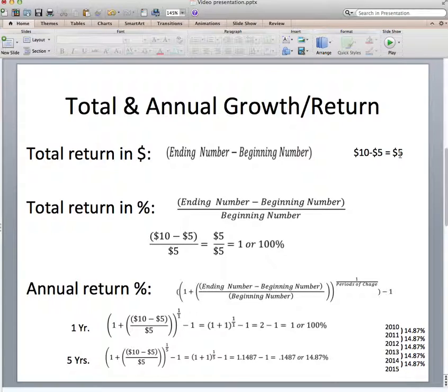So in other words, if we took $5 and grew it 1 time at 14.87%, 2 times, 3 times, 4 times, 5 times, it would grow to $10 over those 5 years of growth.